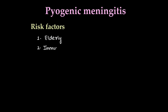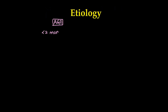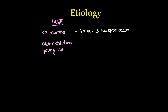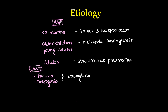Coming to pyogenic meningitis — what are the risk factors? Elderly patients, immunocompromised patients, patients who are diabetic, suffering with malignancy, and alcoholism are the main risk factors. Etiology depends on the age group: in less than 2-month-old babies, group B Streptococcus is the main culprit; in older children and young adults, Neisseria meningitidis; in adults, Streptococcus pneumoniae; and in trauma or iatrogenic meningitis, Staphylococcus aureus is the main cause.